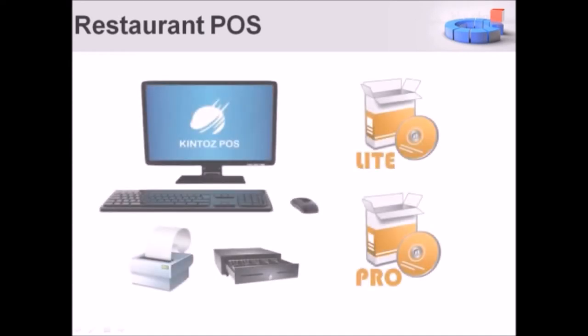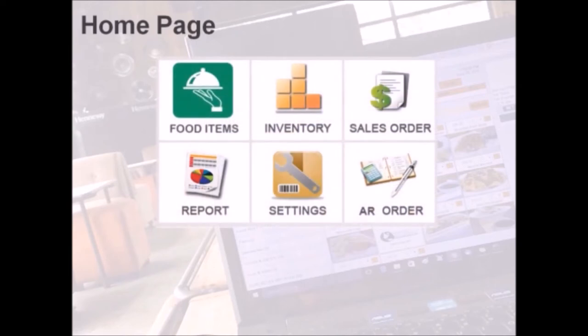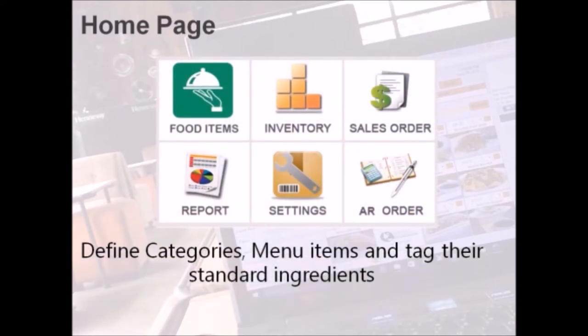Welcome to the restaurant version of Kenta's point of sale. While we have Lite and Pro versions, let's go through the system's overall functions. First, the home page has six main modules. Food items define food categories, menu items, and tag their necessary ingredients.